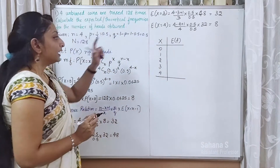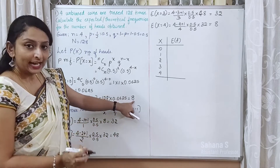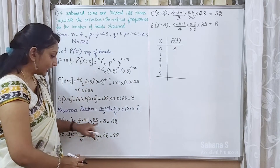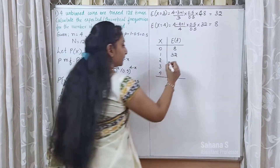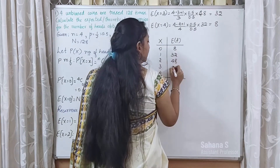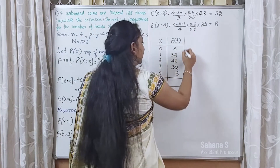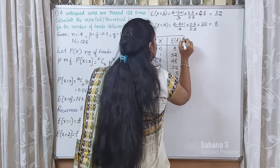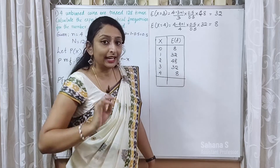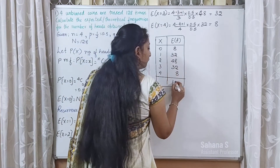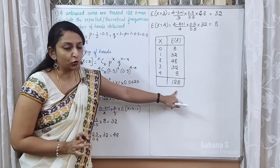We have calculated the expected frequencies: E(x=0) = 8, E(x=1) = 32, E(x=2) = 48, E(x=3) = 32, and E(x=4) = 8. Adding all these frequencies gives us a total of 128, which equals capital N. This confirms our calculations are correct.